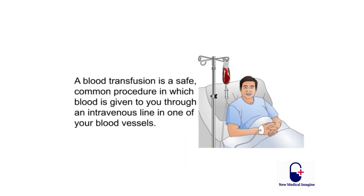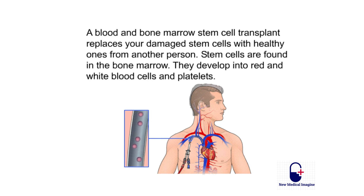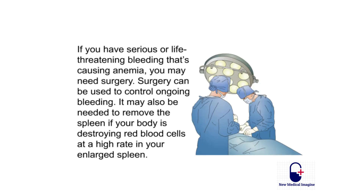A blood transfusion is a safe, common procedure in which blood is given through an intravenous line in one of your blood vessels. A blood and bone marrow stem cell transplant replaces your damaged stem cells with healthy ones from another person. If you have serious or life-threatening bleeding causing anemia, surgery may be needed to control the bleeding or to remove an enlarged spleen that is destroying red blood cells at a high rate.